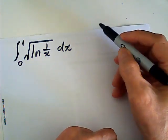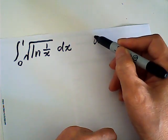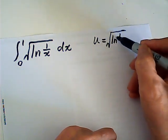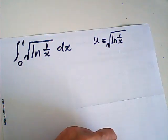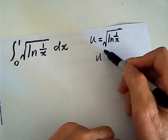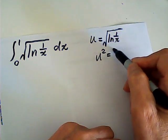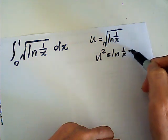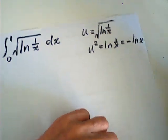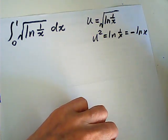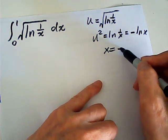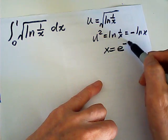Let u be the square root of log 1 over x. Then u squared is log 1 over x, which is equal to negative log x. Then obviously x is equal to e to the negative u squared.